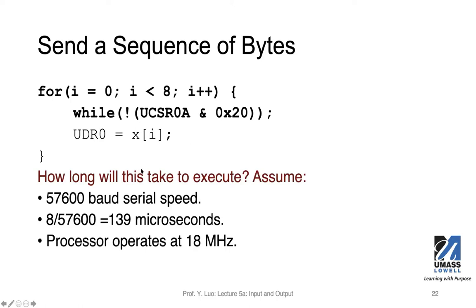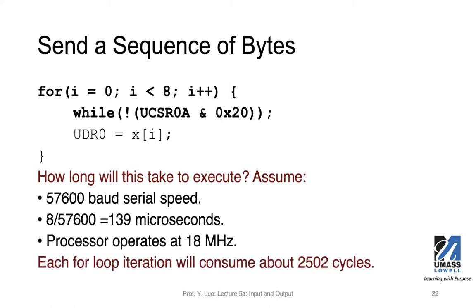How long will this take to execute? If we assume the speed of the serial port is 57k baud — the baud rate is close to bit rate for this serial port transfer — this rate works out to about 140 microseconds for one byte. Assuming the processor operates at 18 megahertz, we are actually spending about 25,000 cycles for each loop iteration.